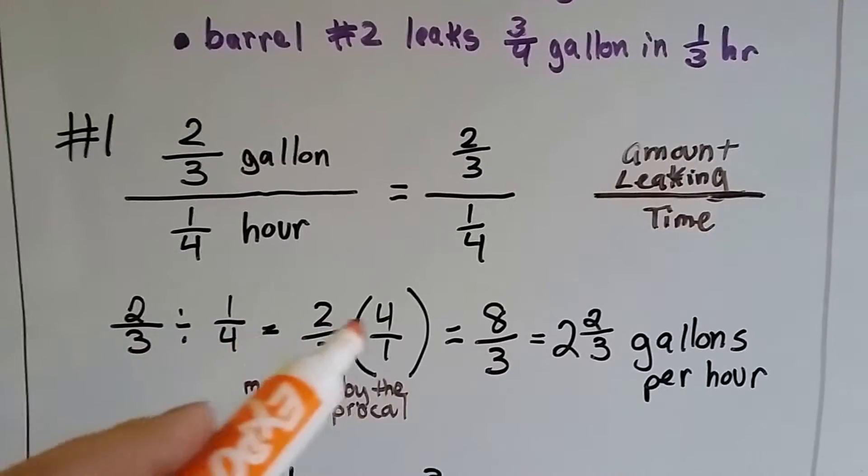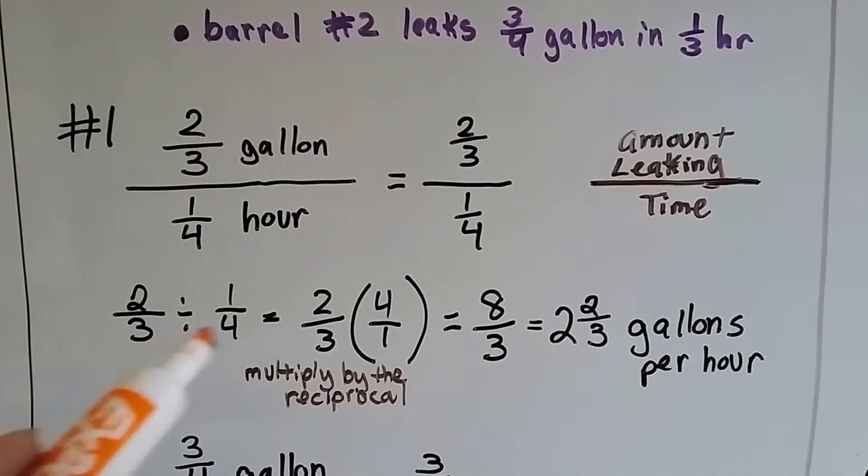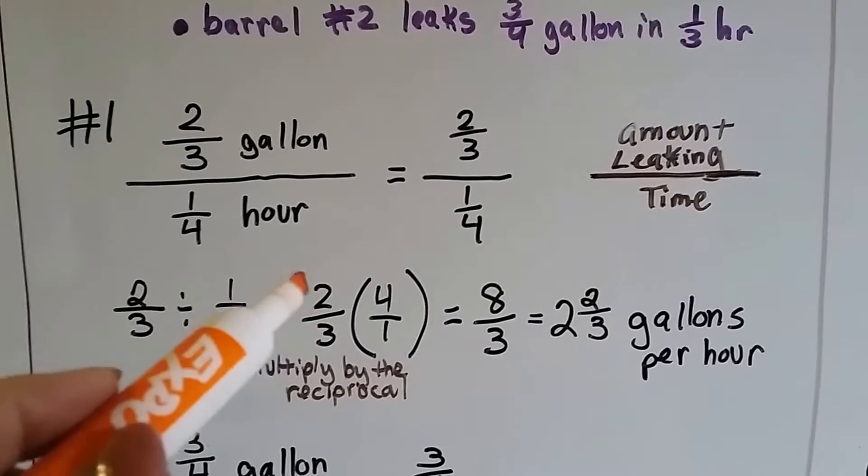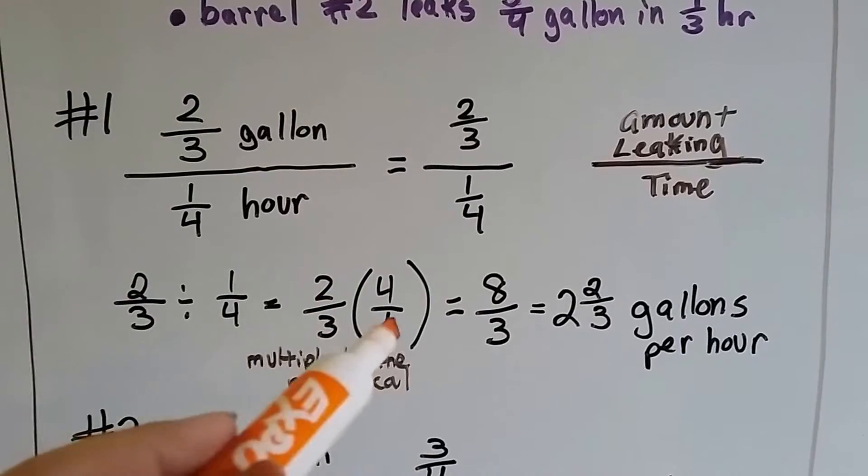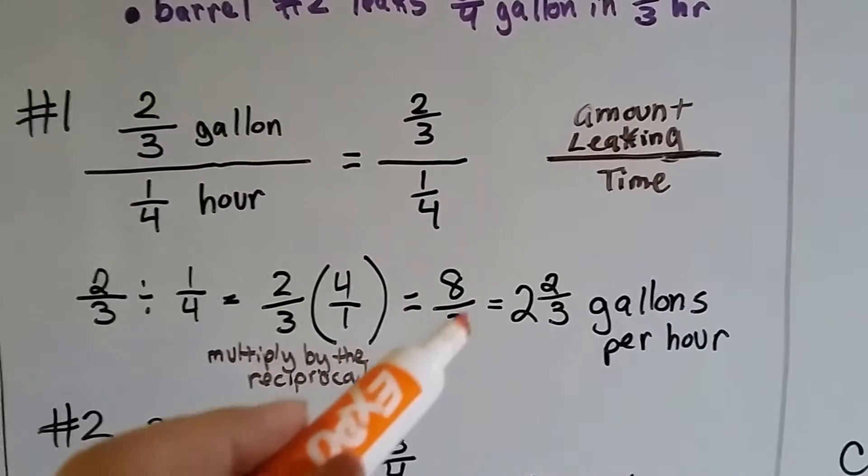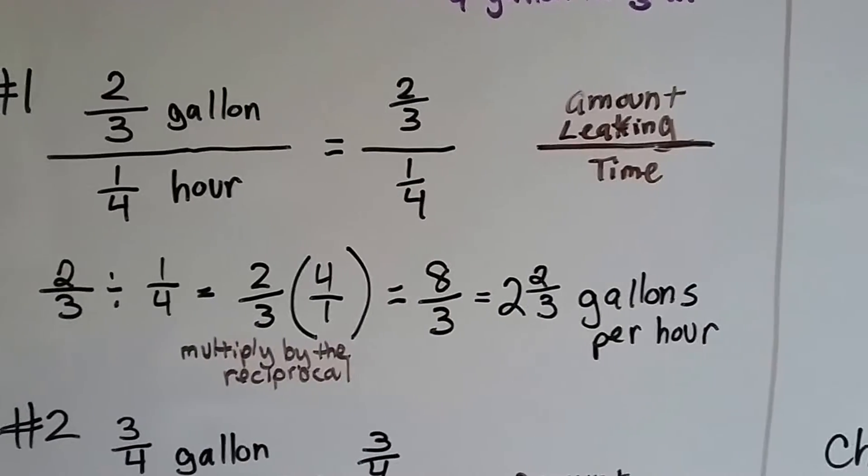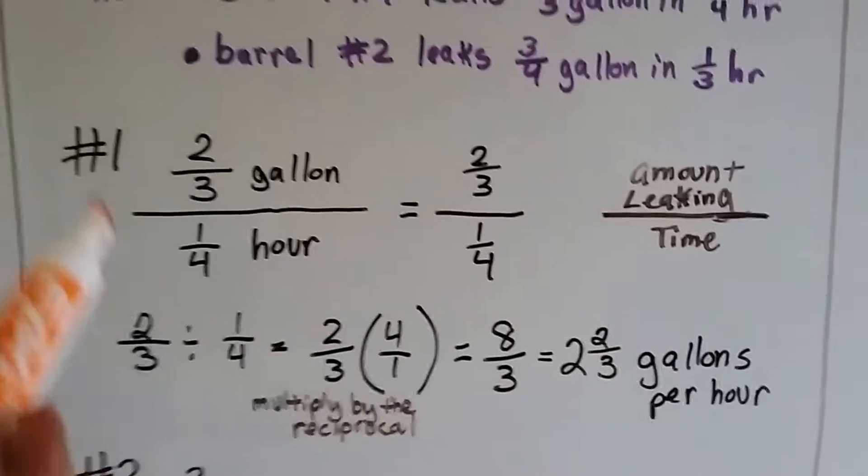So this one-fourth needs to flip upside down like this to a four over a one. That's the reciprocal. And instead of dividing, we multiply. So we go straight across. 2 times 4 is 8, 3 times 1 is 3, and it's eight-thirds. When we simplify that, 3 goes into 8 two times with two-thirds left over. So it's two and two-thirds gallons per hour is leaking in number one.